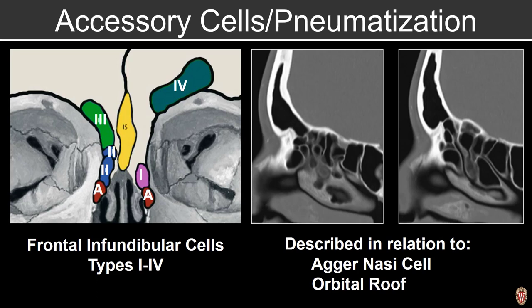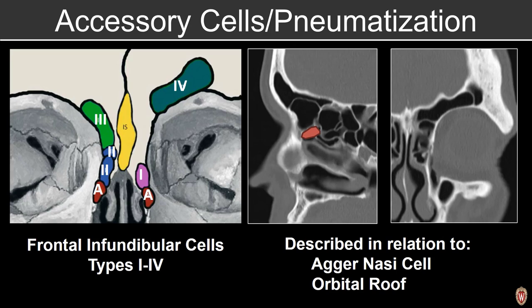Frontal infundibular cells are described in relation to the agger nasi cell. One cell above the agger nasi cell is a type 1 frontal infundibular cell. Two air cells above are type 2. A large air cell spanning both the ethmoid sinus and extending into the frontal sinus is a type 3 frontal infundibular cell. An isolated air cell within the frontal sinus is a type 4 frontal infundibular cell.